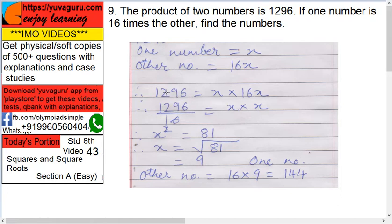Multiply this: 16x into x means 16x² equals 1296. Bring this 16 on this side, it becomes x² equals 1296 upon 16. Divide this: 16 into 1296 gives 81.